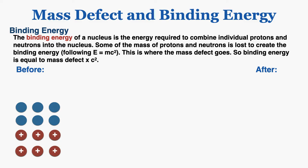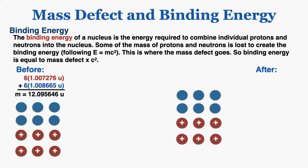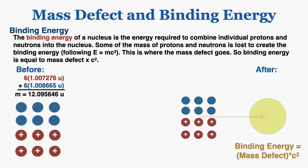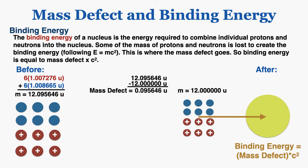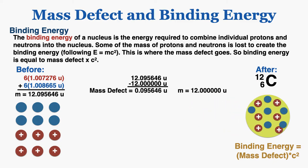As an example, if we have six individual neutrons and six individual protons and want to combine them into a single carbon-12 atom, their individual total mass is 12.095646u. When you combine them into a carbon-12 nucleus they sacrifice some of their mass and turn it into binding energy — energy that holds them together. So they're less massive than before, and their total mass is now exactly 12u, meaning a mass defect of 0.095646u was changed into binding energy to prevent the particles from repelling each other.